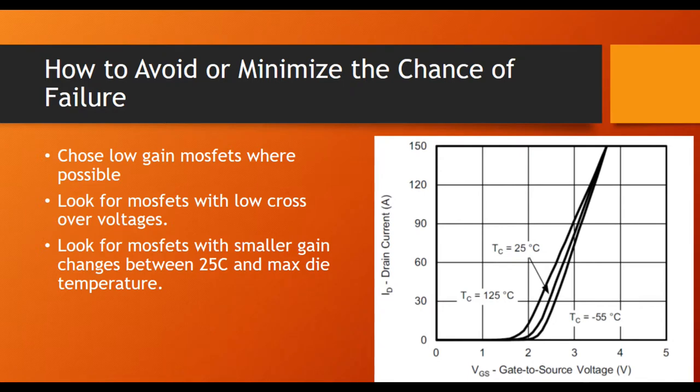So how do we minimize the chance of the failure? One of the first things you can do is look for the lowest gain MOSFETs where possible. Look for MOSFETs with low crossover voltages so that you're not within the positive temperature coefficient region for that long. Look for MOSFETs that have a very small change in gain between the 25C case and the 150 or 175, or whatever the maximum junction temperature is, so that you don't see a large increase in gain from cell to cell.